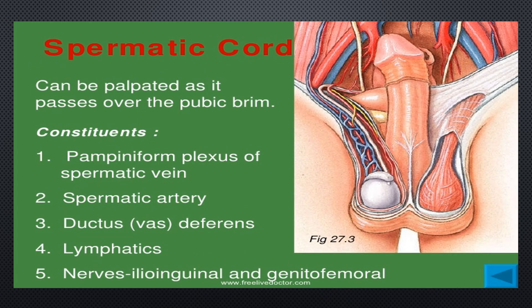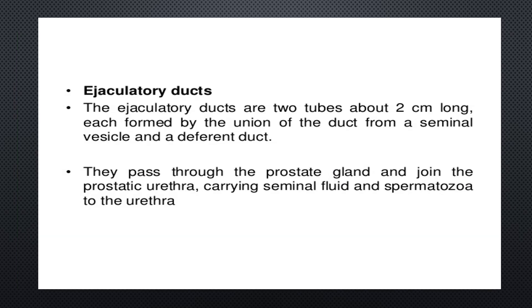The spermatic cord can be palpated as it passes over the pubic brim. It contains the pampiniform plexus of the spermatic vein, the spermatic artery, ductus deferens, lymphatics, and nerves including the ilioinguinal and genitofemoral nerves. The ejaculatory ducts are two tubes about 2 cm long, each formed by the union of the duct from a seminal vesicle and a ductus deferens. They pass through the prostate gland and join the prostatic urethra, carrying seminal fluid and spermatozoa.